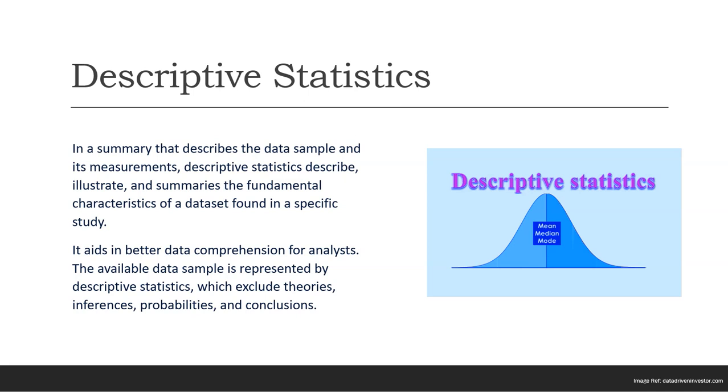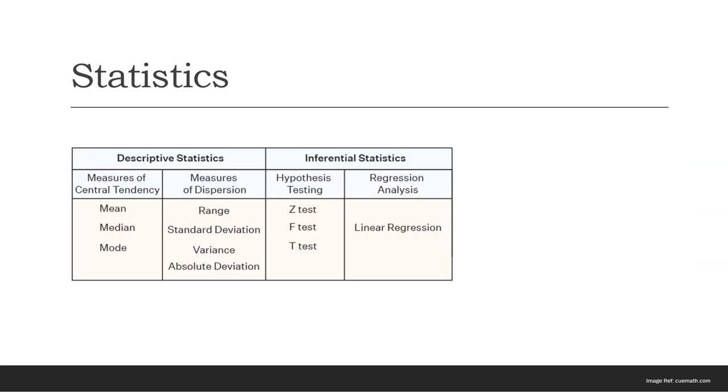The most commonly used method for measuring dispersion is standard deviation. Standard deviation is calculated by multiplying the total squared deviation from the mean by the total number of observations.